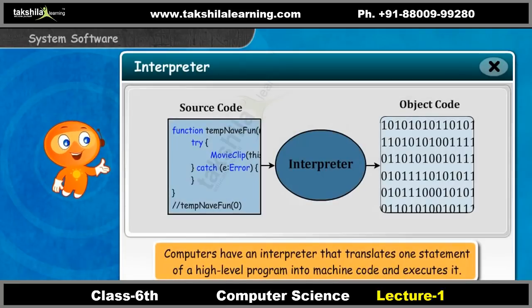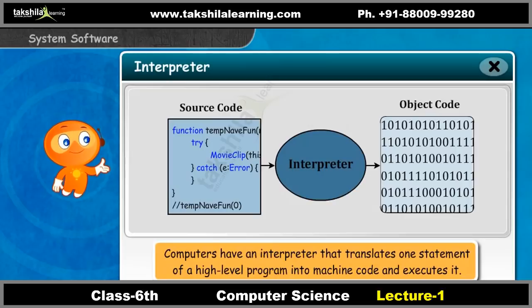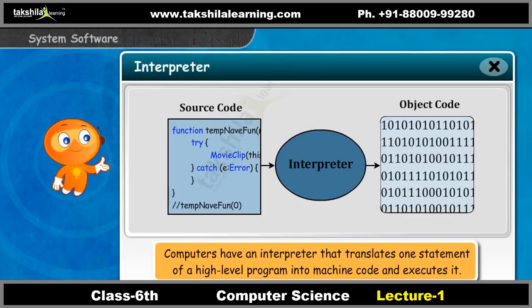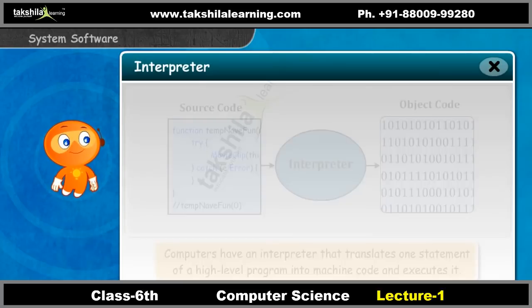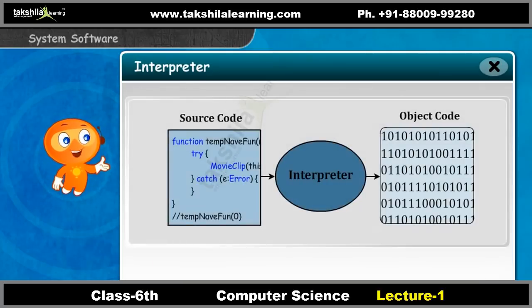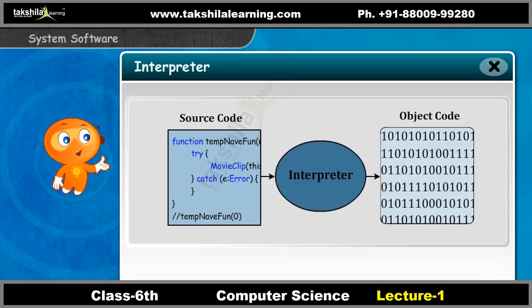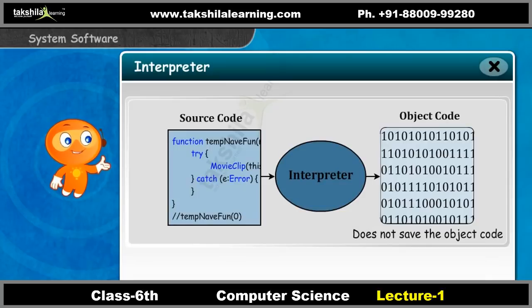Computers have an interpreter that translates one statement of a high-level program into machine code and executes it. It repeats the same for the next statement, but does not save the object code.